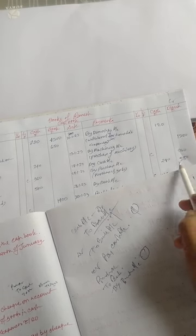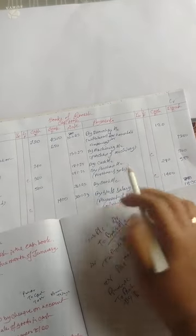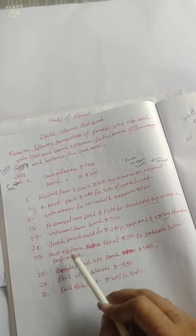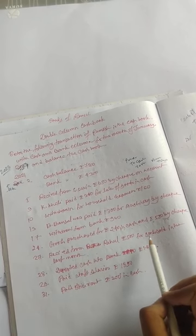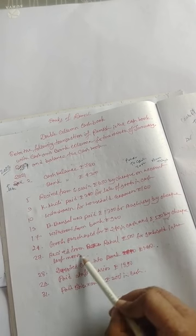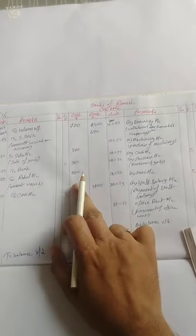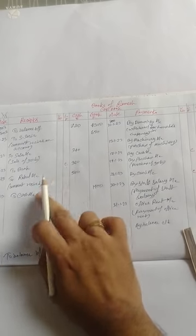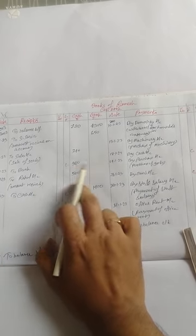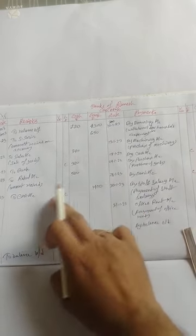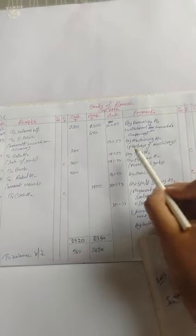Next, receive from Rahul 500 for goods sold last month. The journal entry is: cash account debit to Rahul account — 500. In the cash book, write 'To Rahul account' and the amount goes in the cash column.